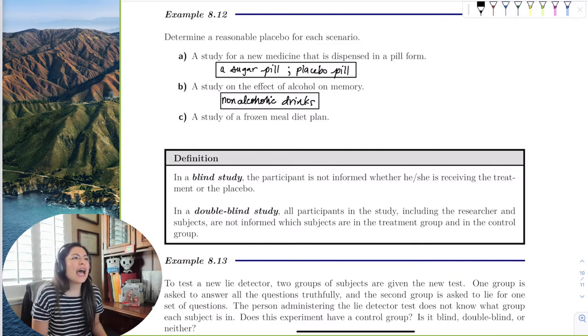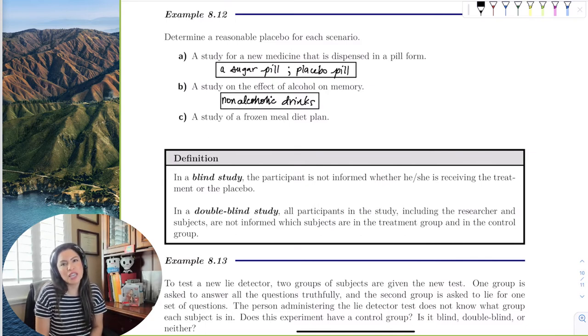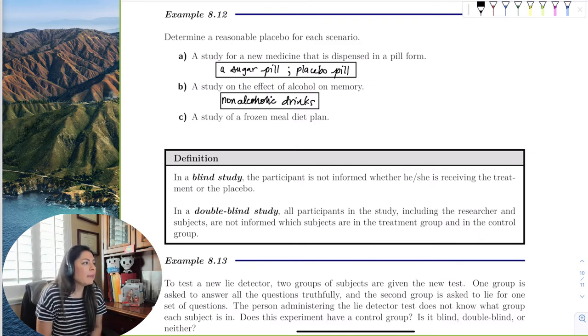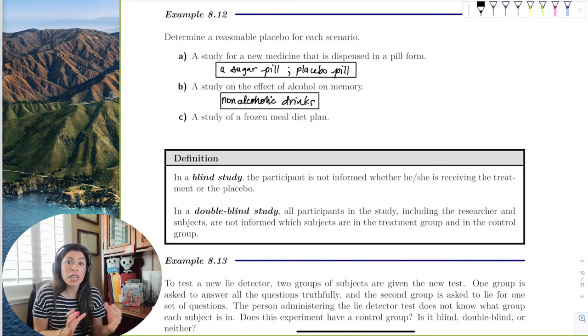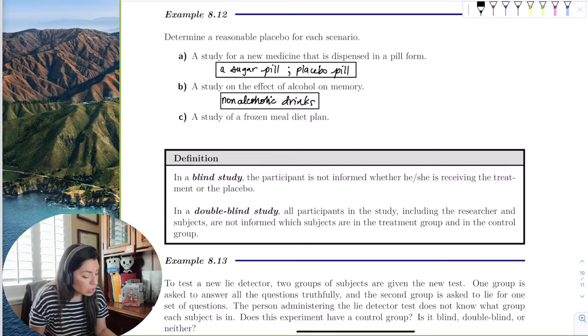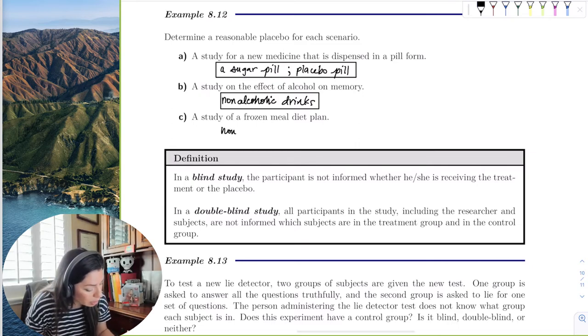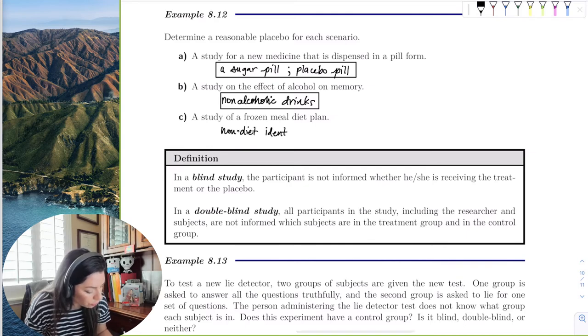So how about a study of a frozen meal diet plan? I mean, how many frozen meals that say they're perfect for diet, you know? So we, that wouldn't even be a pill form, right? We would have to disguise it as food. So we would have to what? See maybe that there's an, I think like lean cuisine is pretty good because we could disguise that as like, there's a little plate of pasta, frozen pasta. So we could get another frozen pasta that's not diet food and, you know, have that as the placebo. So we could do non-diet frozen food, non-diet identical frozen food, because we don't want it to be the same, then they would know.